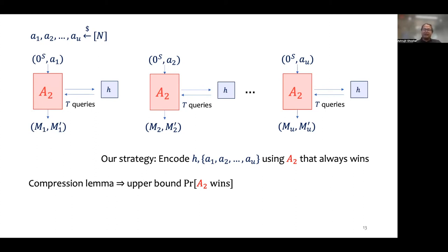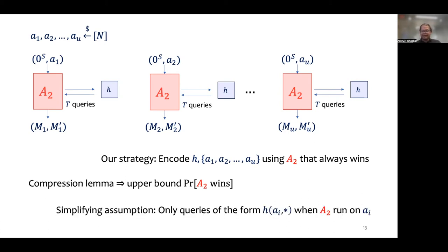Before starting with the encoding procedure, let us make the following simplifying assumption: when the adversary in the multi-instance game runs on a particular salt, it only queries the random oracle on values prefixed by that particular salt. Of course, this assumption is false, but we will make it initially for ease of exposition and remove it later. This assumption implies that the queries made by the multi-instance adversary when running on different salts are completely different.